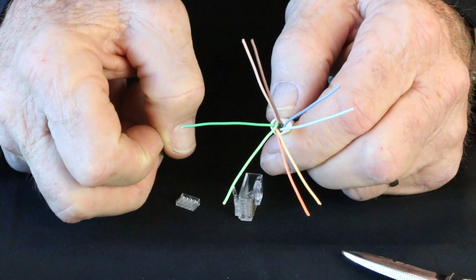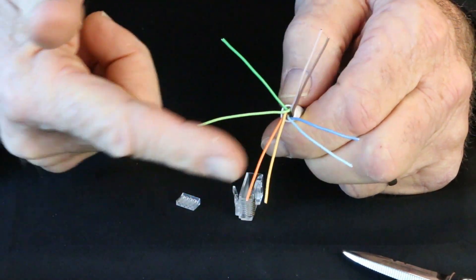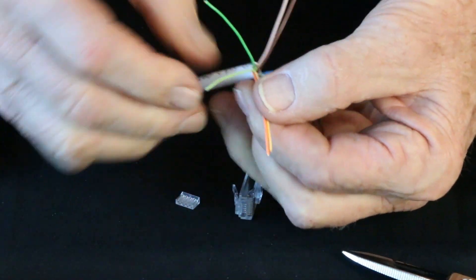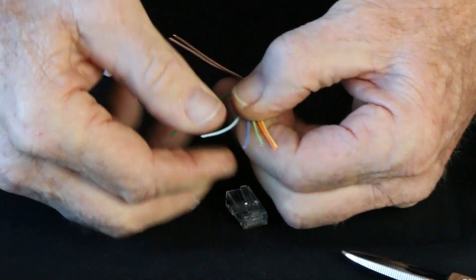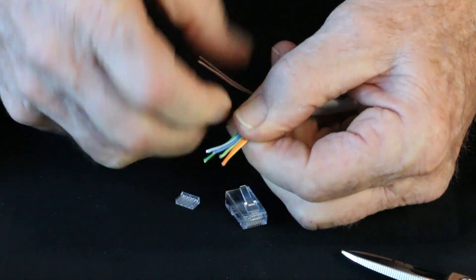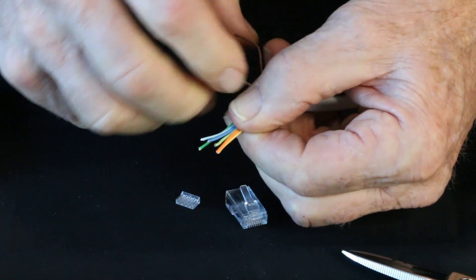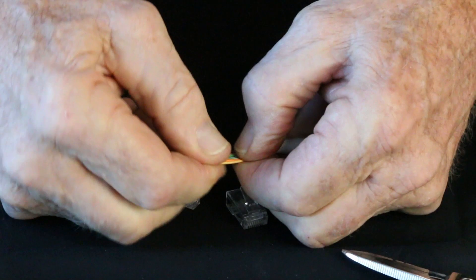Got our kinks combed out. And I'm ready to lay out. I'm going to go with the B. So, we're going to go orange, white, orange. And then green, white, blue, blue, white, and green. Brown, white, and brown. So, there's my layout.